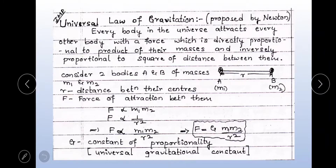Next, the important Universal Law of Gravitation, proposed by Newton — Isaac Newton. It states: every body in the universe attracts every other body with a force which is directly proportional to the product of their masses and inversely proportional to the square of the distance between them. Consider two bodies A and B of masses M1 and M2.